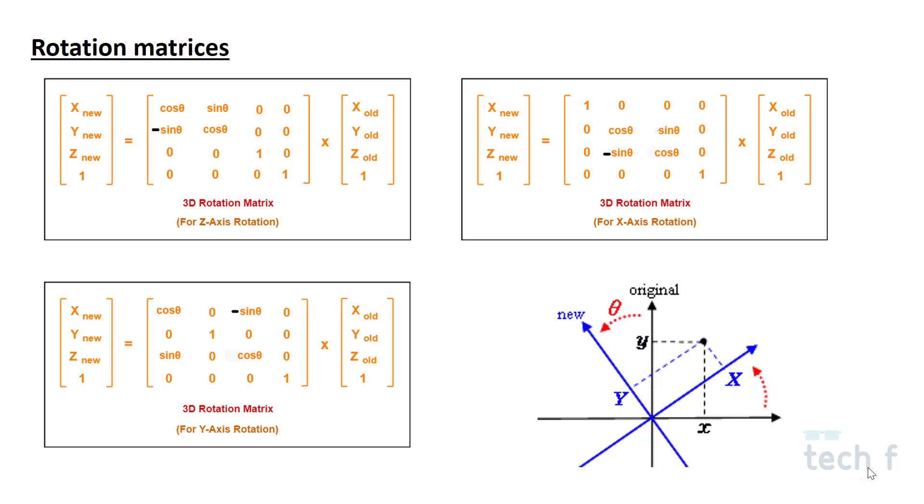You can actually deduce the 3D Cartesian coordinate transformation matrices from these matrices by just removing the 4th row as well as 4th column of the transformation matrix. The rotation is considered to be positive if the rotation is taking place in anticlockwise direction, as shown in the figure.